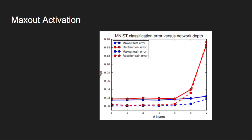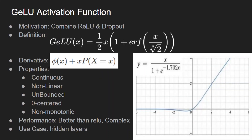The next function is GELU — Gaussian Error Linear Unit. This combines the properties of ReLU and Dropout, where Dropout is a regularization method to improve the generalization capability of the network. GELU aims at combining both into a single function. The function uses the error function (ERF) from probability and statistics, and there is also an approximation of GELU in terms of the sigmoid function. Looking at the graph, it has some negative values so it is a zero-centred function, unbounded on the positive side and bounded on the negative side.